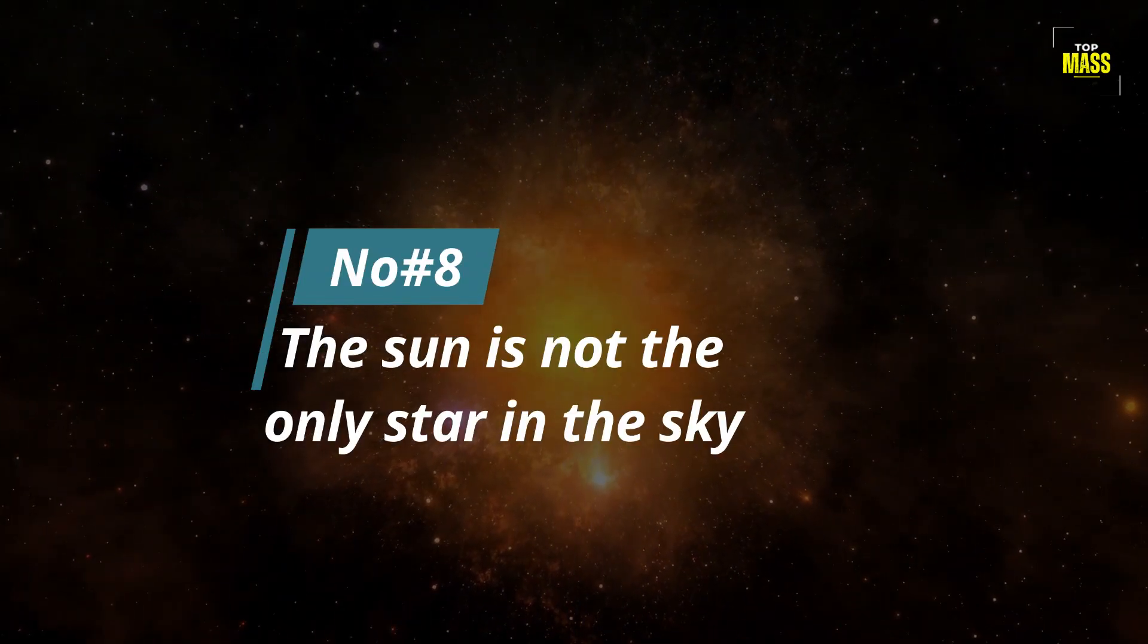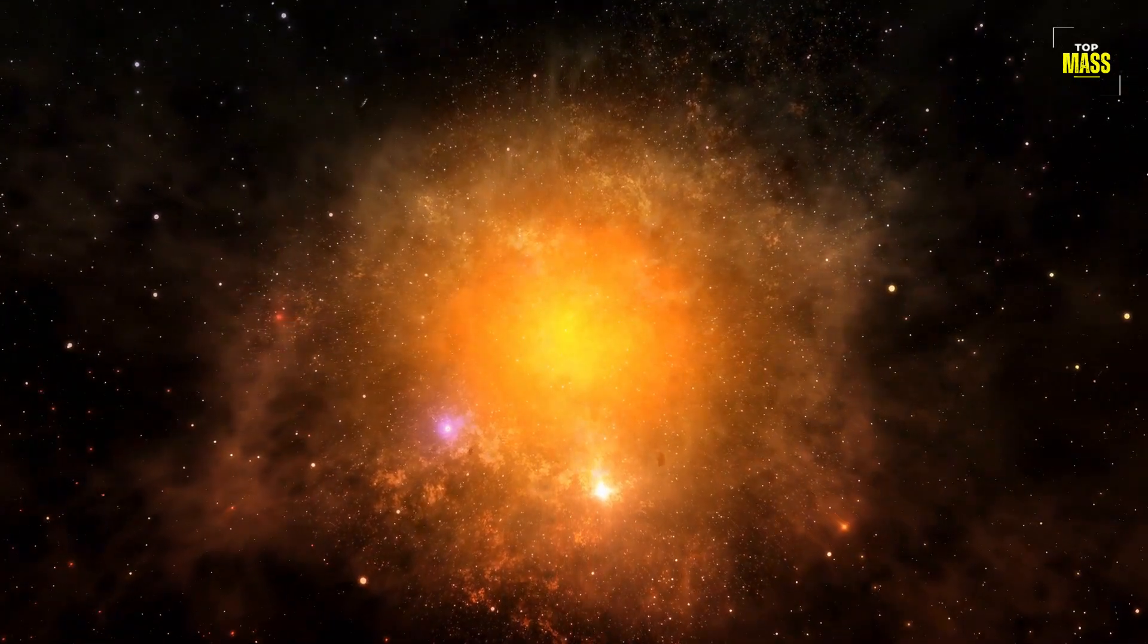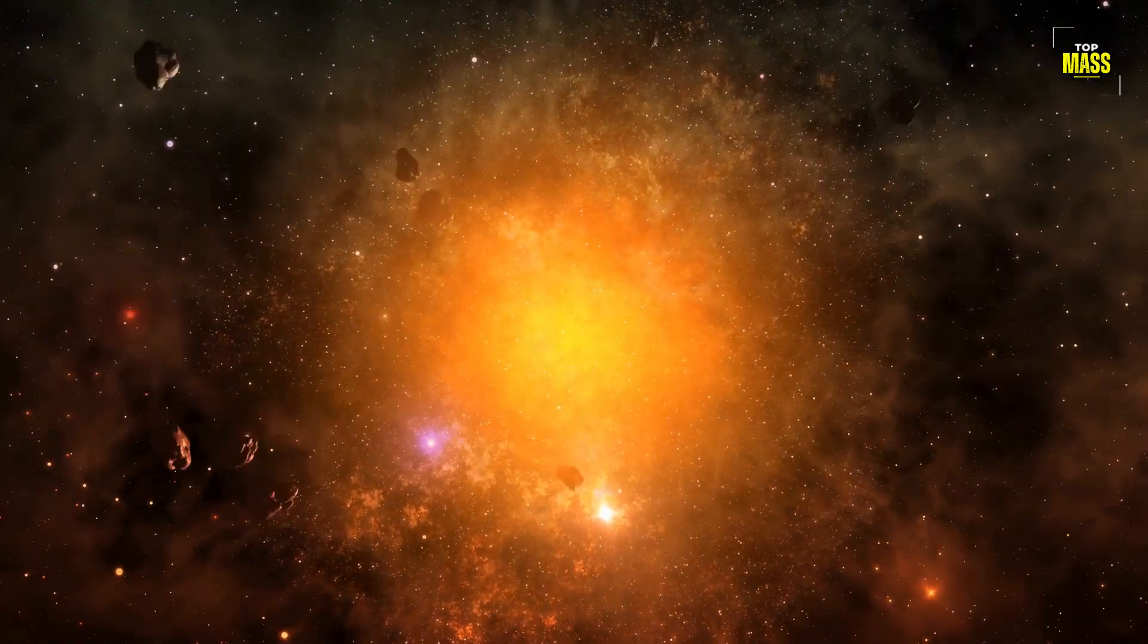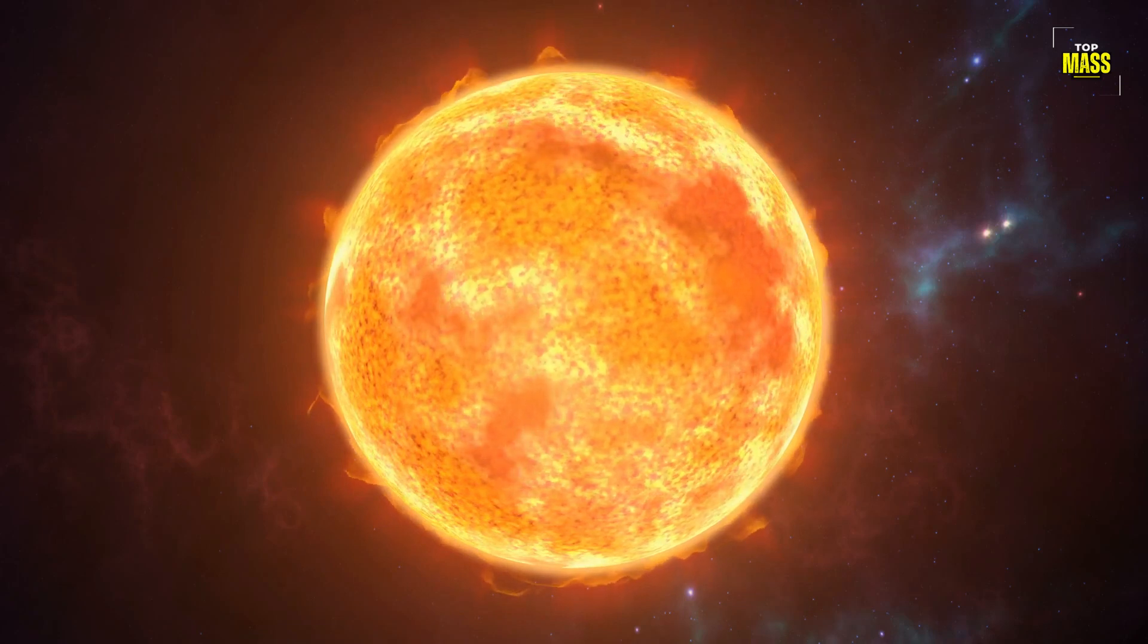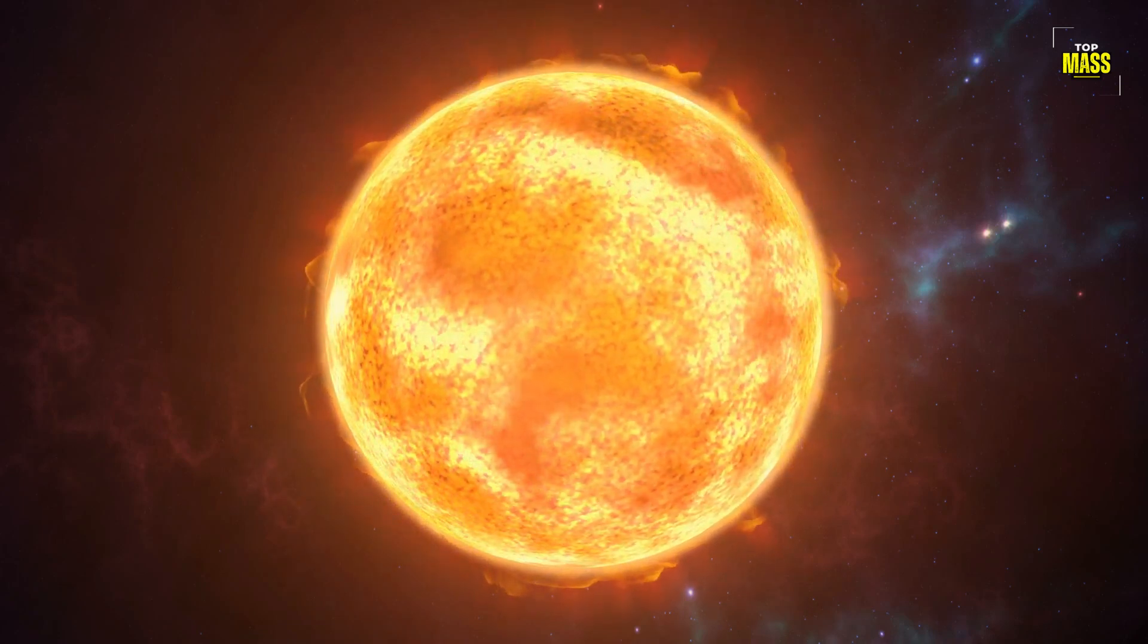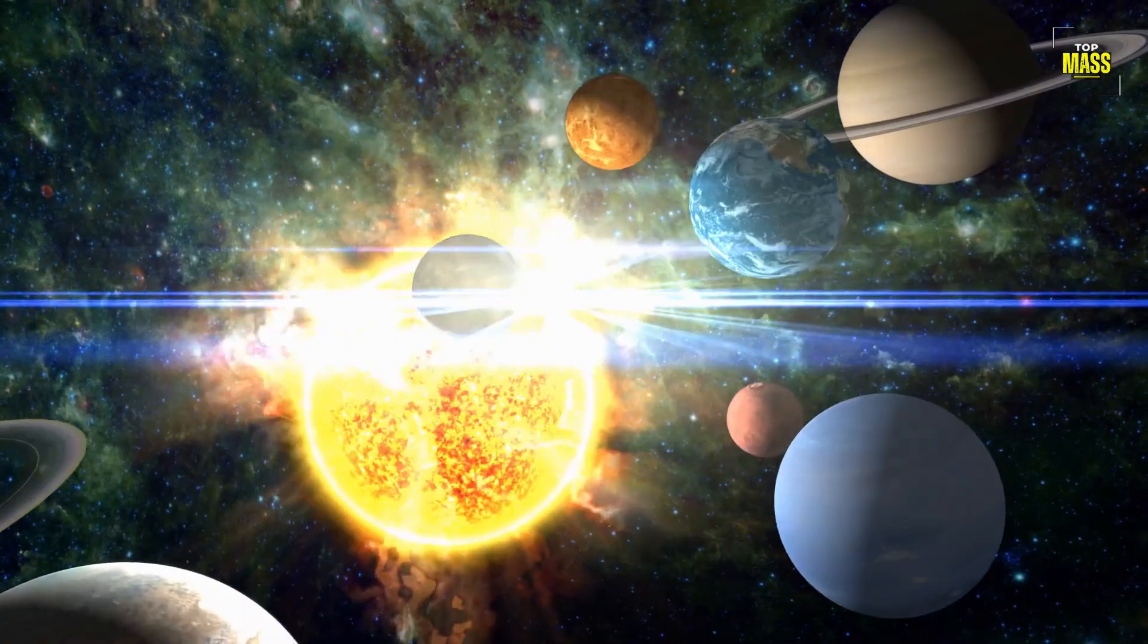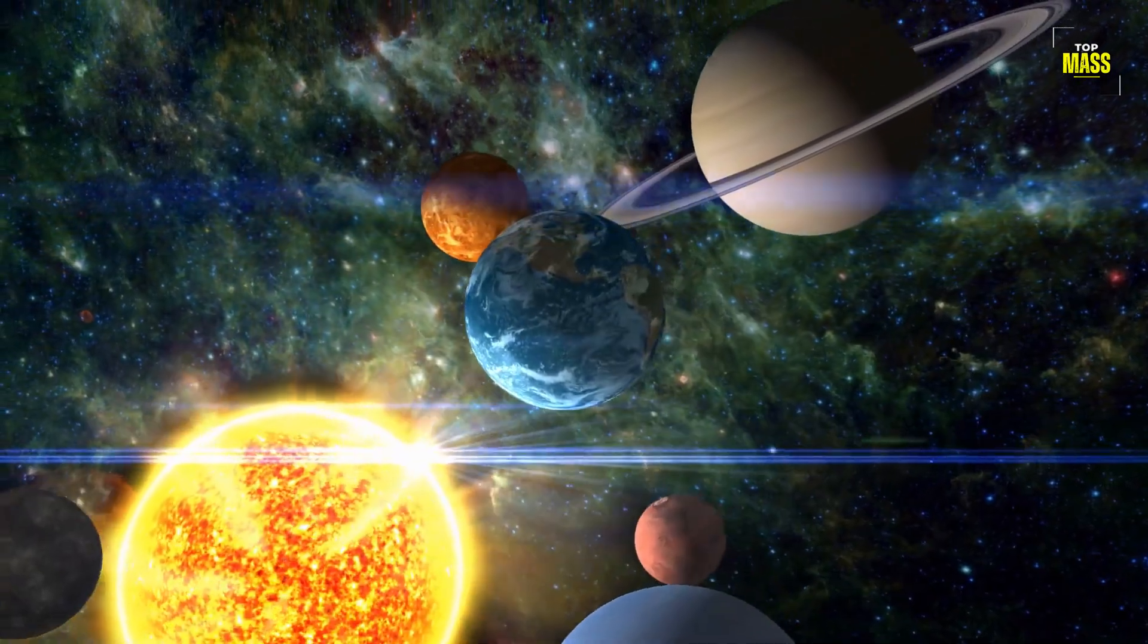Number 8. The Sun Is Not The Only Star In The Sky. When we look up at the sky, we often think that the bright star shining in the night sky is only our sun. However, this couldn't be further from the truth. In fact, our sun is just one of billions of stars in the Milky Way galaxy. These stars come in different sizes and colors, with some being small and red, while others are massive and blue. Many of these stars also have their own planets orbiting around them, just like Earth orbits around our sun.